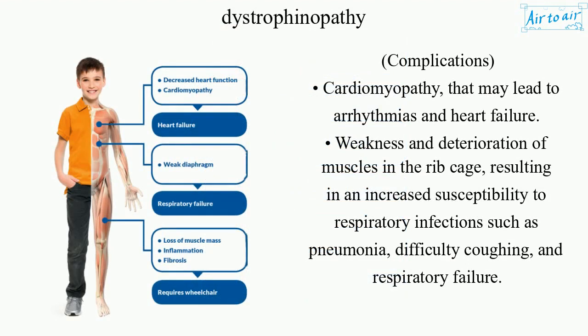Complications: Cardiomyopathy, that may lead to arrhythmias and heart failure. Weakness and deterioration of muscles in the rib cage, resulting in an increased susceptibility to respiratory infections such as pneumonia, difficulty coughing, and respiratory failure.